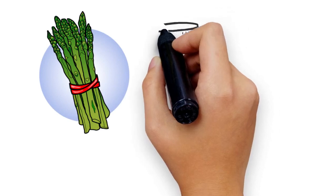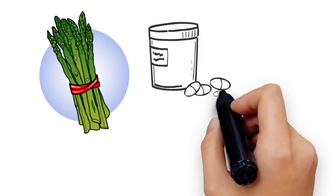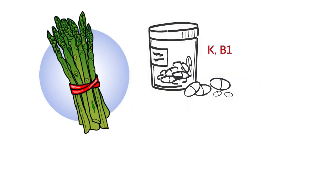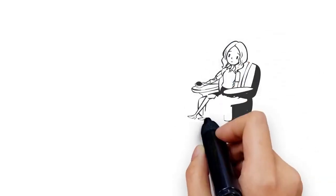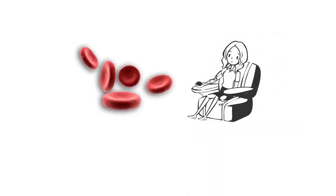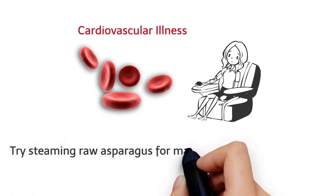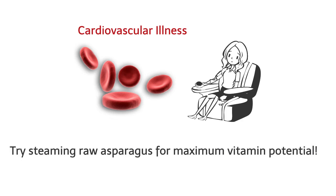Two: Asparagus. Asparagus is full of fiber and minerals, as well as a long list of vitamins including K, B1, B2, C, and E. Asparagus can help to lower blood pressure and prevent blood clots that can cause serious cardiovascular illness. Try steaming raw asparagus for maximum vitamin potential.